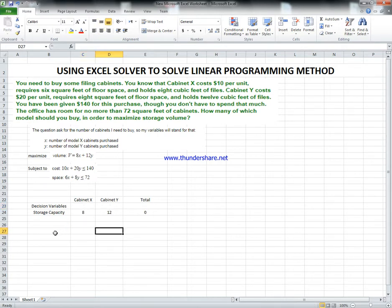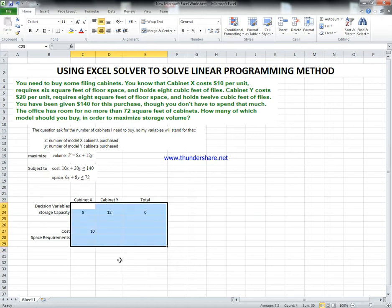Let's consider the constraints. I have two constraints: cost as expenses and space requirements. Cost: I have here 10 for X and 20 for Y, while for the space requirement it's 6 square feet for Cabinet X and 8 square feet for Cabinet Y. All this information is written in the given.